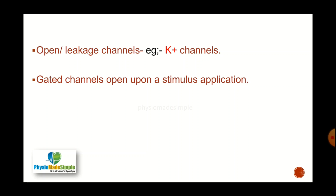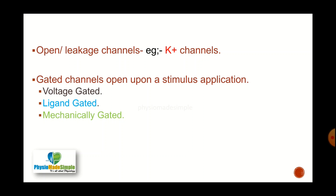Gated channels, as the name indicates, have a gate through which ions cannot easily enter. They open only upon stimulus application and are of three types: voltage gated, ligand gated, and mechanically gated channels. Voltage gated channels are ion specific and allow permeation of only one type of ion — for example, sodium voltage gated channels or calcium voltage gated channels. The movement of ions through voltage gated channels leads to the development of membrane potential.